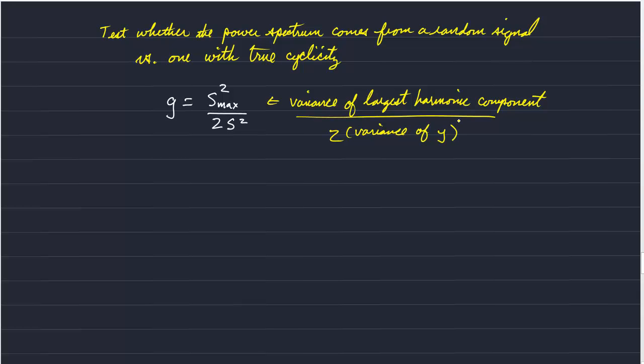And we can compare that to g alpha, which is our significance level, at n minus 1 over 2. And that's about equal to 1 minus the exponent of the natural log of alpha minus the natural log of n minus 1 over 2.